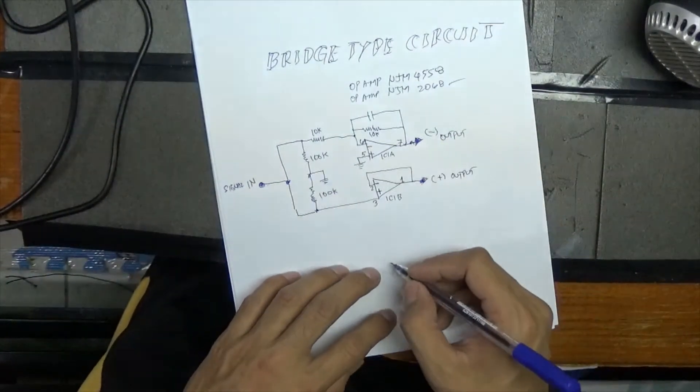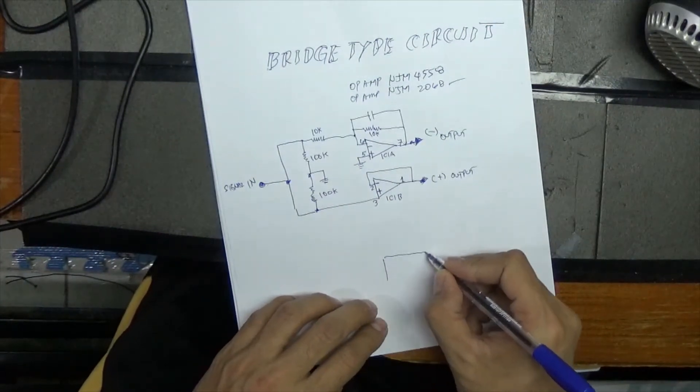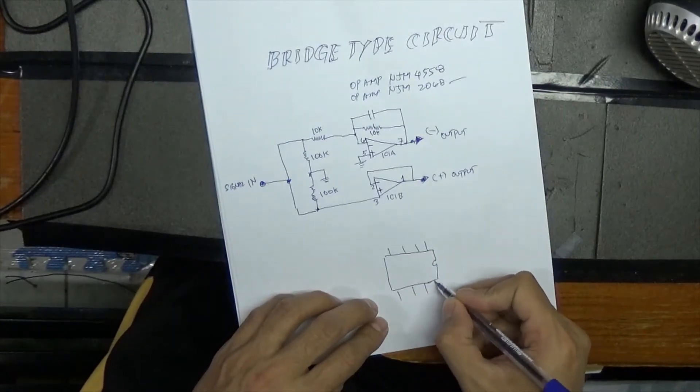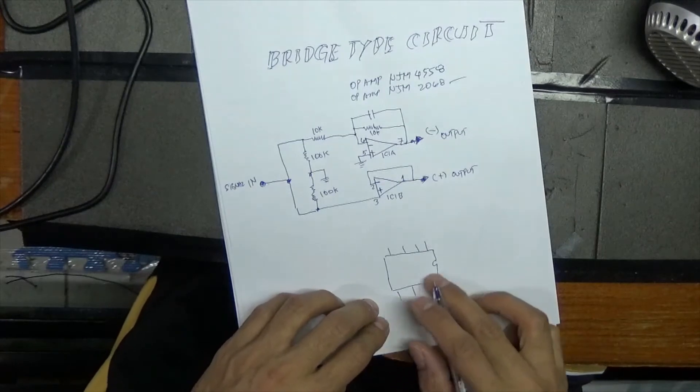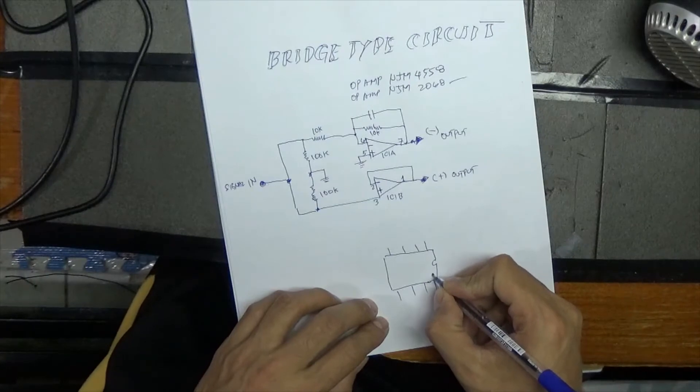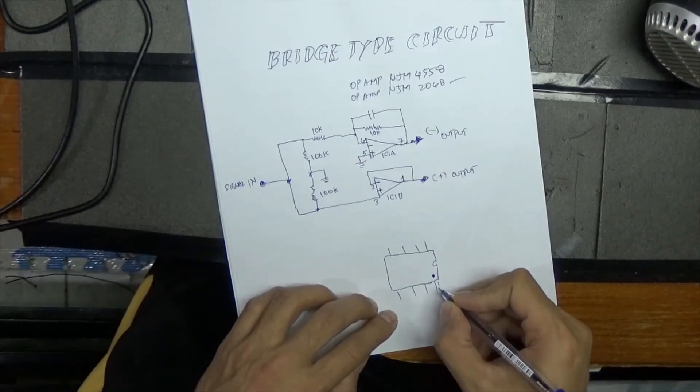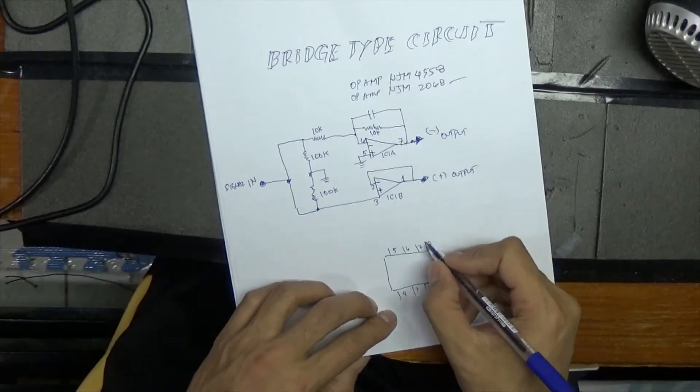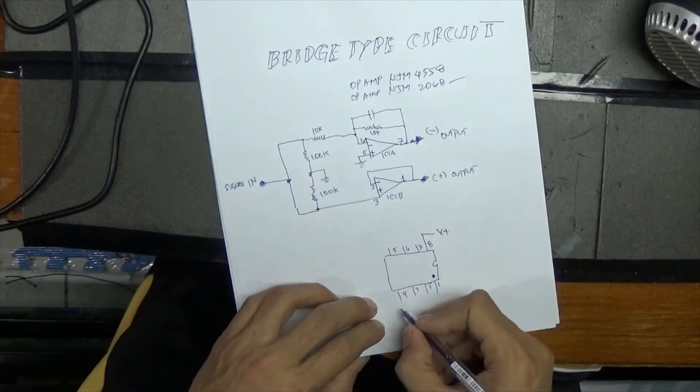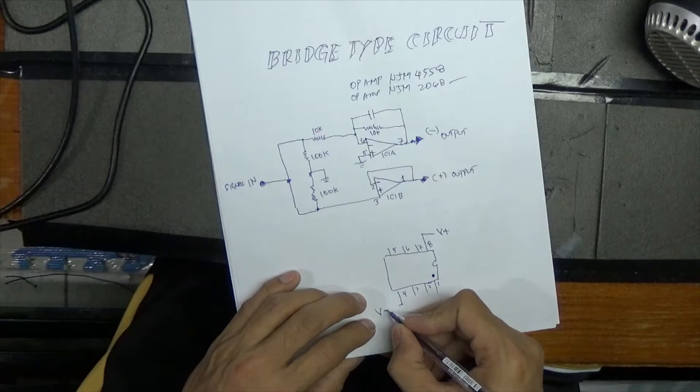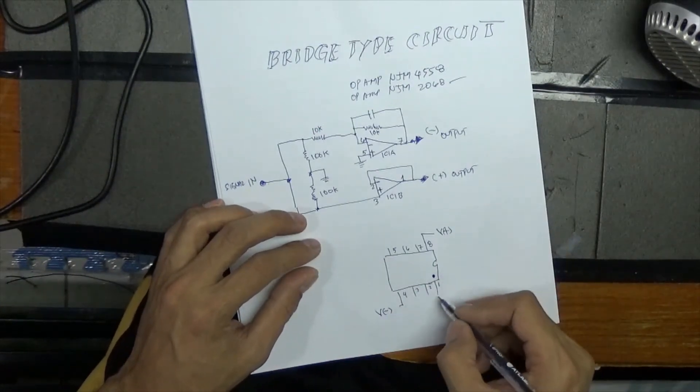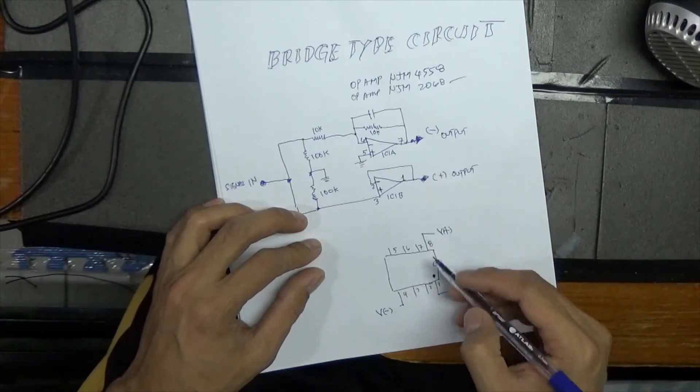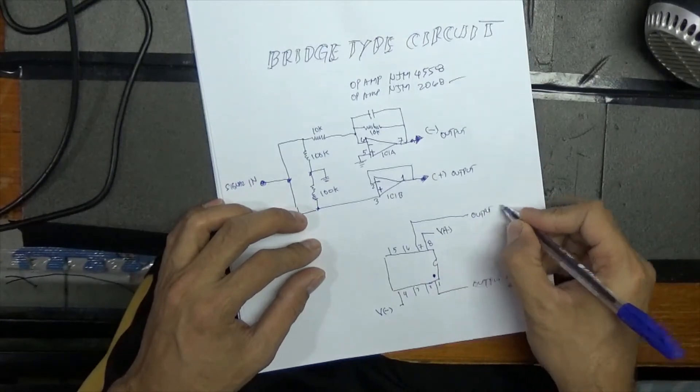This one is one IC. One, two, three, four, five, six, seven, and eight. This one is B plus, this one is B negative. Output is this one, out positive. Other output is seven, output negative.